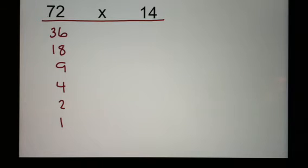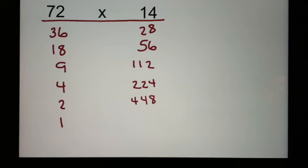Now, in the second column, I'm going to be doubling. 14 doubled is 28. 28 doubled is 56. 56 doubled is 112. 112 doubled is 224. 224 doubled is 448. And 448 doubled is 896.